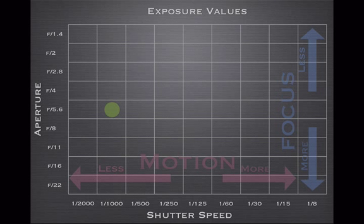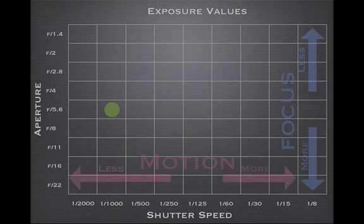They relate through what we call exposure values. Aperture scales usually run from about f1 or f1.4 all the way up to f22 and sometimes higher. Shutter speed sometimes runs from about 1/2000 or 1/4000 of a second all the way down to 30 seconds in some camera cases.